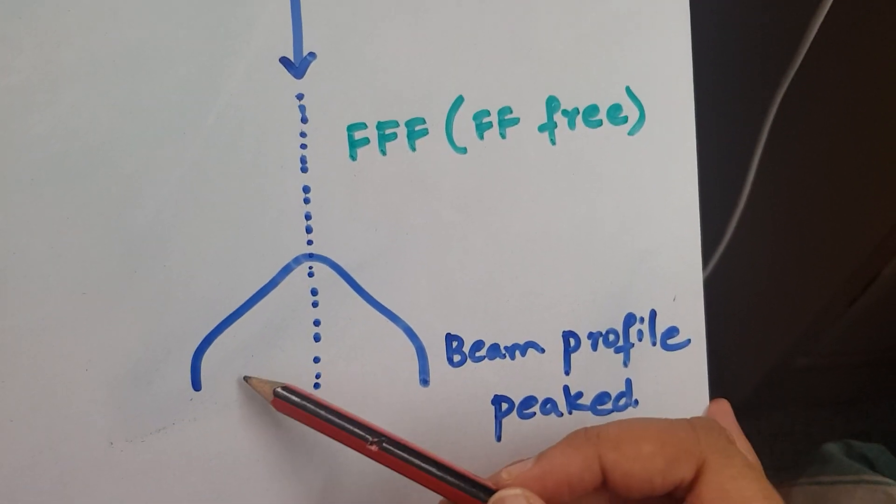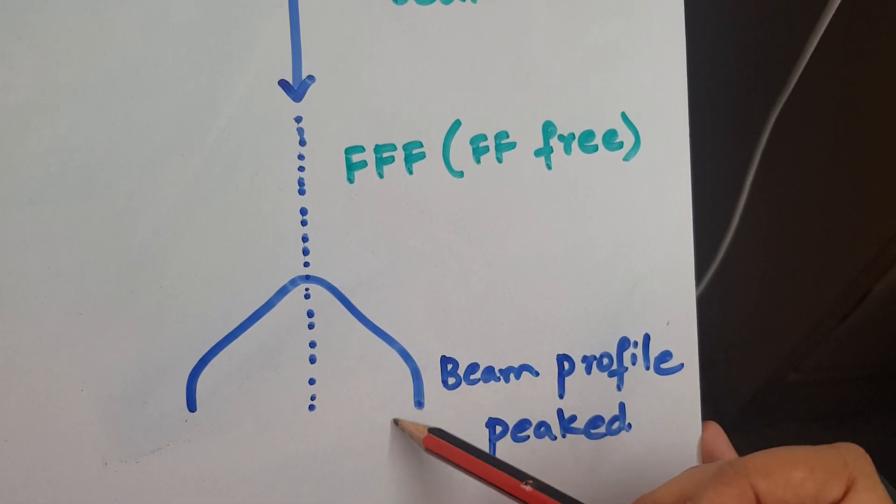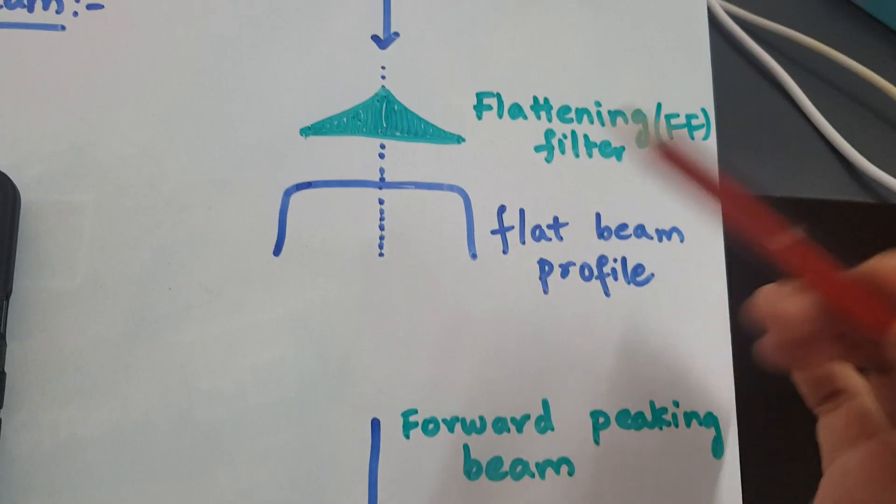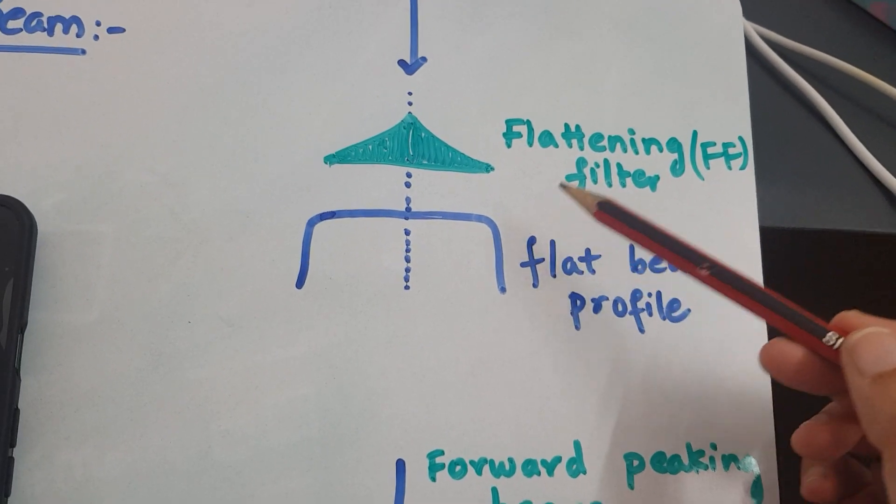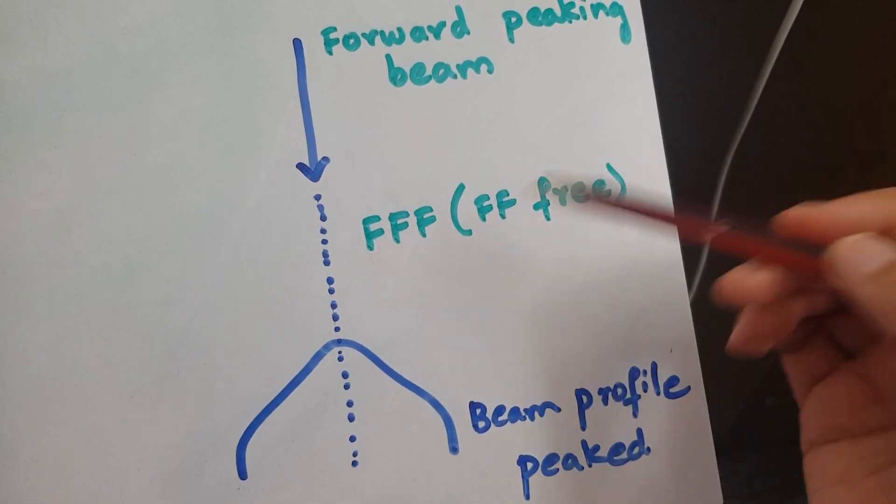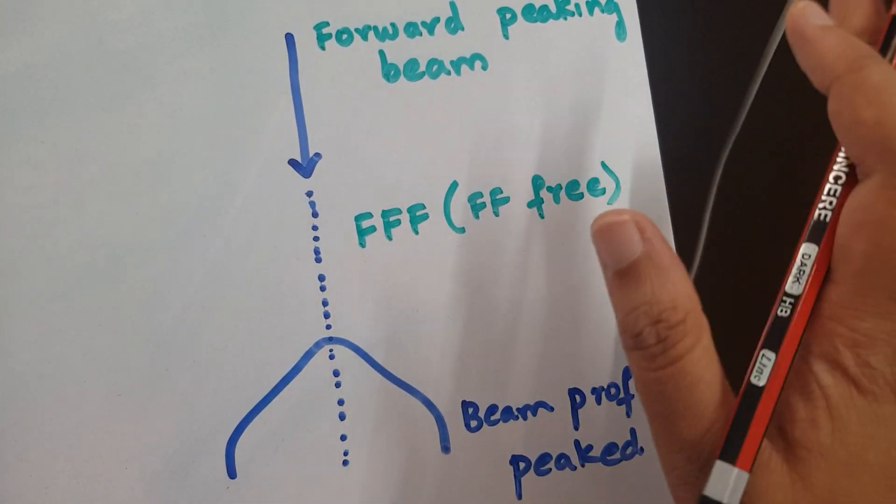The beam profile will be peaked like this, so that is FFF. This is used in probably 3DCRT, IMRT, and VMAT, but this is specifically used for SBRT and SRS where we need this forward peaking beam as such.